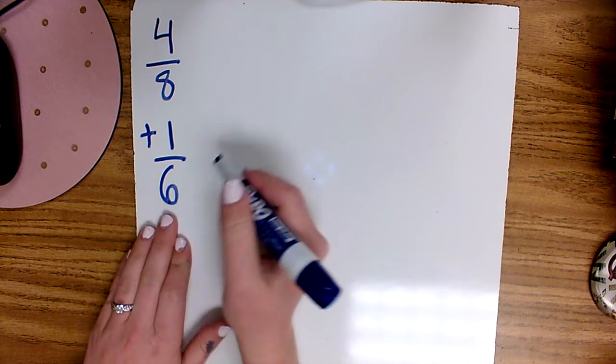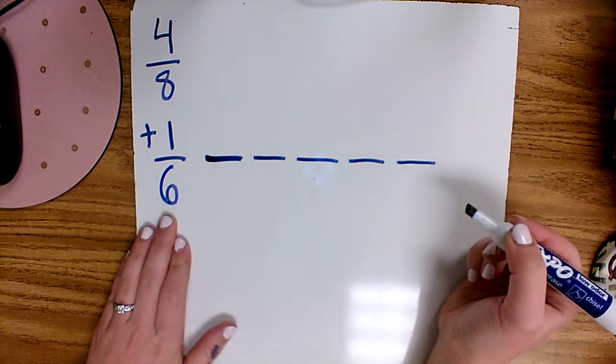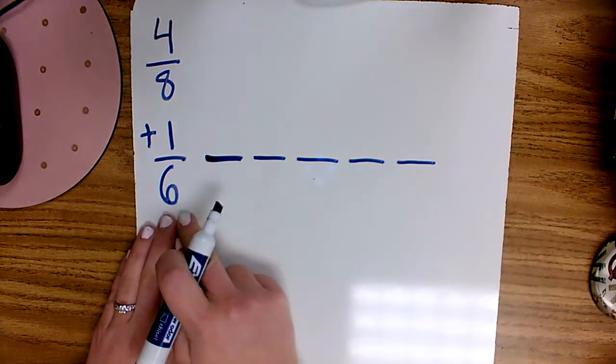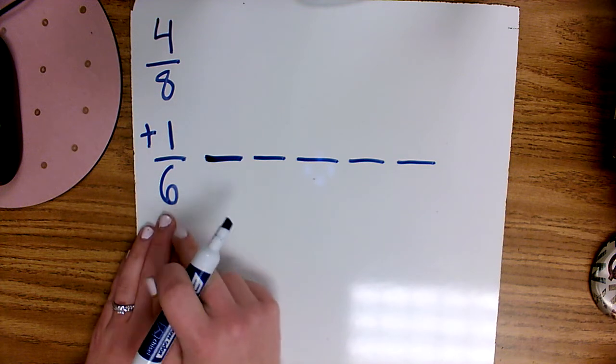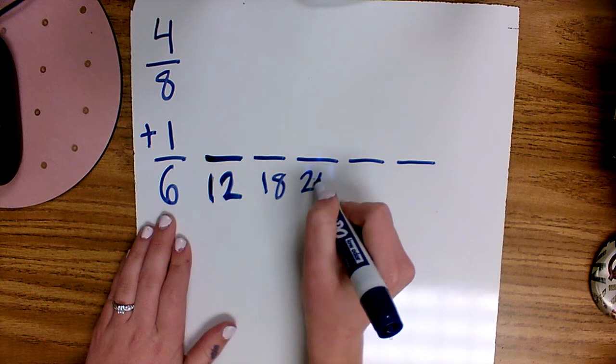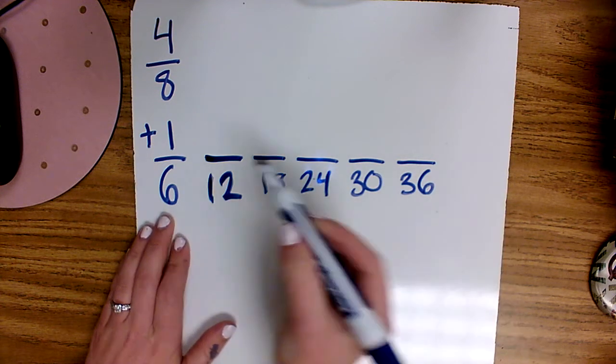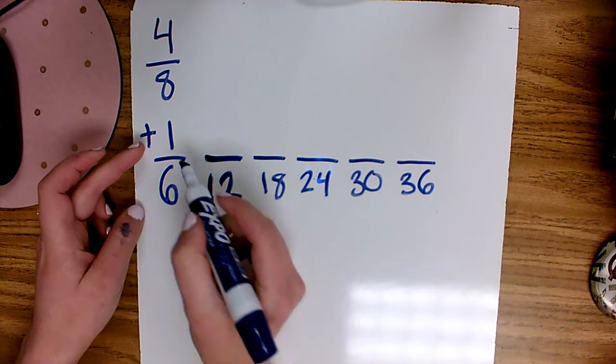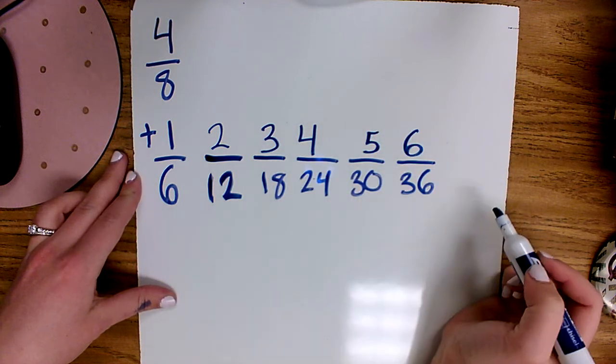I always start with the fraction with the smallest denominator and I mark out five equivalent fractions that I'm going to make. Then I skip count using both the numerator and denominator. So for the denominator I'm counting by sixes: 6, 12, 18, 24, 30, 36. And the numerator I'm skip counting by ones: one, two, three, four, five, six.